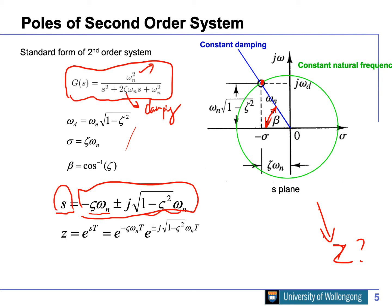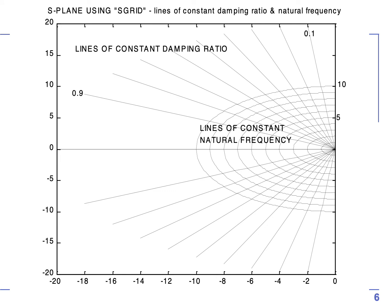To map this to the Z-domain, we substitute these values into z = e^(sT). The result is quite complicated: the magnitude depends on both damping and natural frequency, and the phase also depends on both. So instead of working purely analytically, we use visualization. In the S-domain, we can use the MATLAB function 'sgrid' to draw this plot, which shows how stable a system is, what its natural frequency is, and what its damping is.